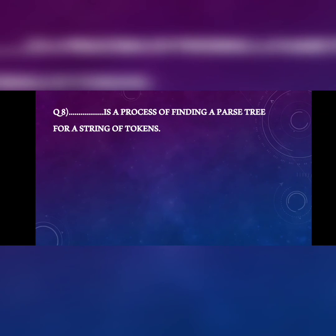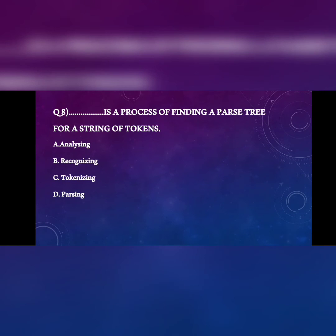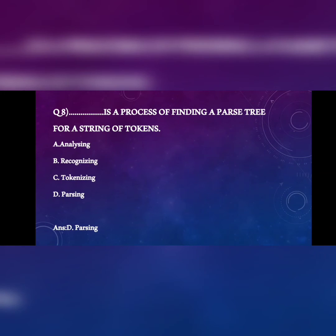Question 8: the process of finding the parse tree for a string of tokens is A) analyzing, B) recognizing, C) tokenizing, D) parsing. A parse tree is a graphical representation of symbols in a tree structure, which is nothing but parsing. The answer is D.